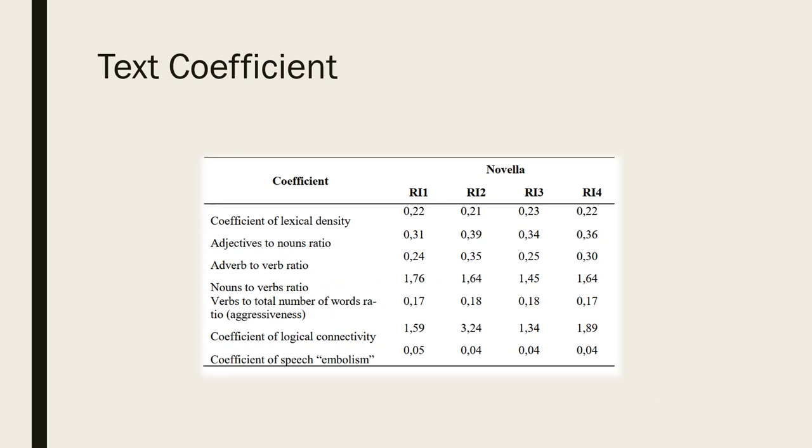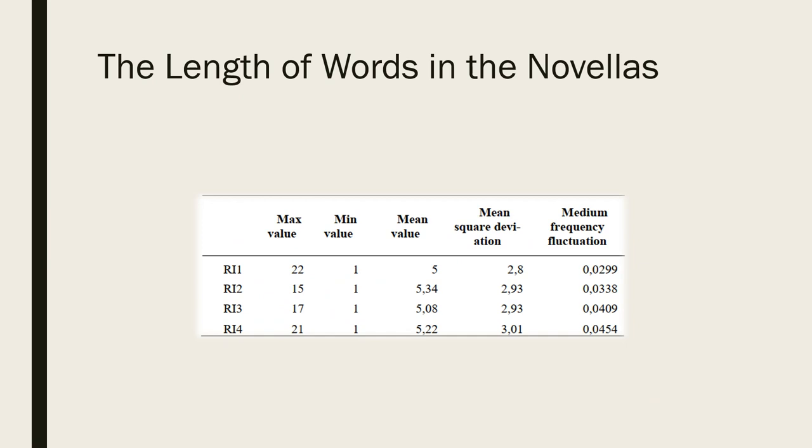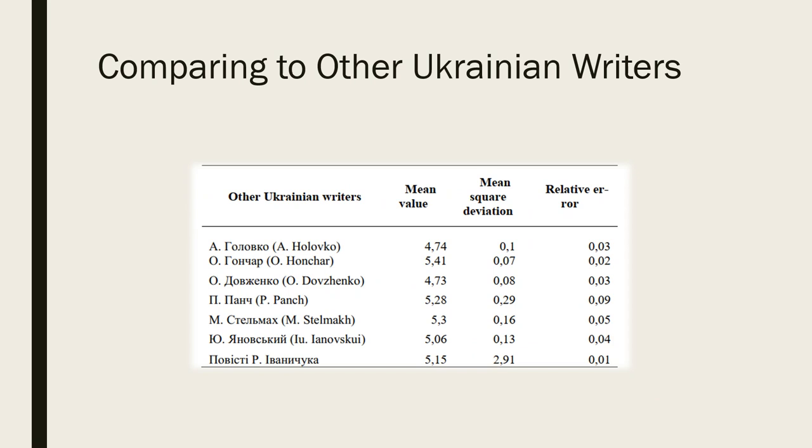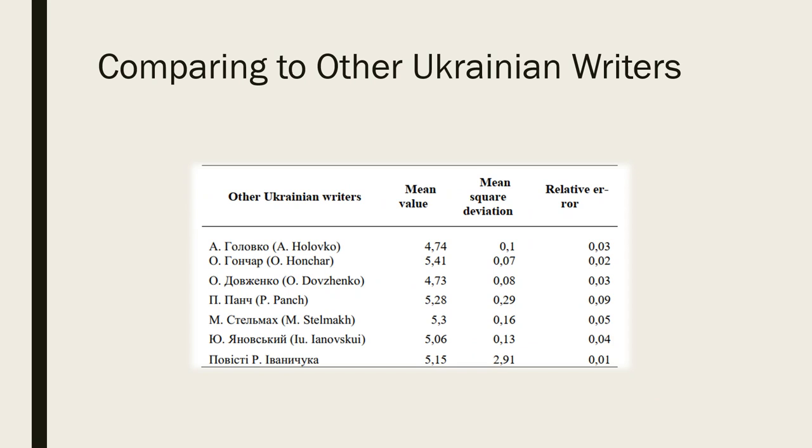It also shows that the writing is emotionally neutral. The presence of high coefficient of logical connectivity within one, the harmonic connection between auxiliary parts of speech and syntactic constructions demonstrate that the sentences produced by the author tend to be complex and compound that is also a distinctive feature of the nominative idiostyle in general. The analysis of the given indicators shows that according to the mean length of words, the novellas of Roman Ivanychuk are close to the texts of Yuri Ivanovsky and Petro Panch, which is pretty close to other Ukrainian genres.